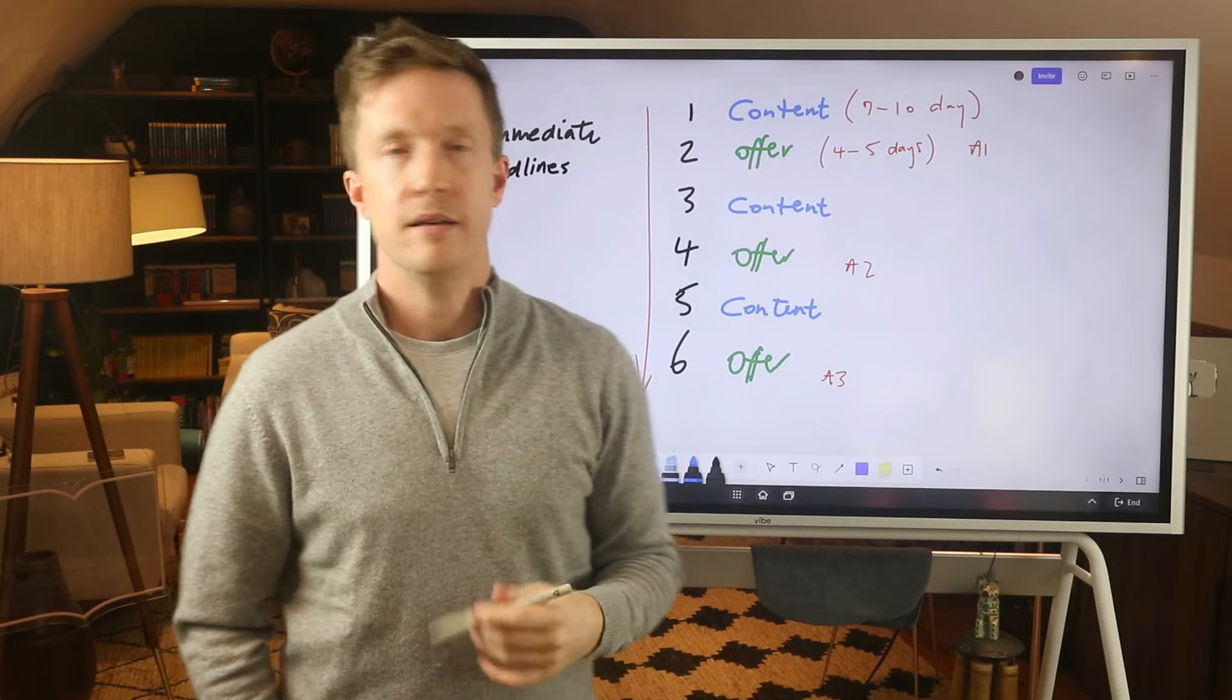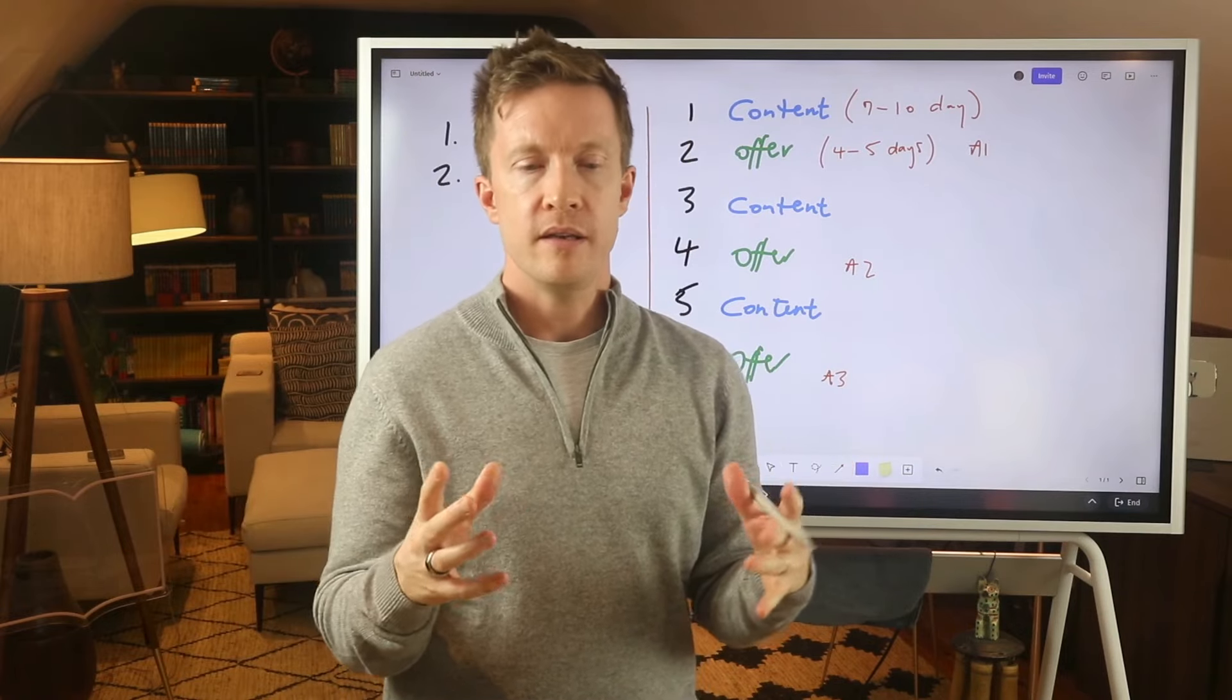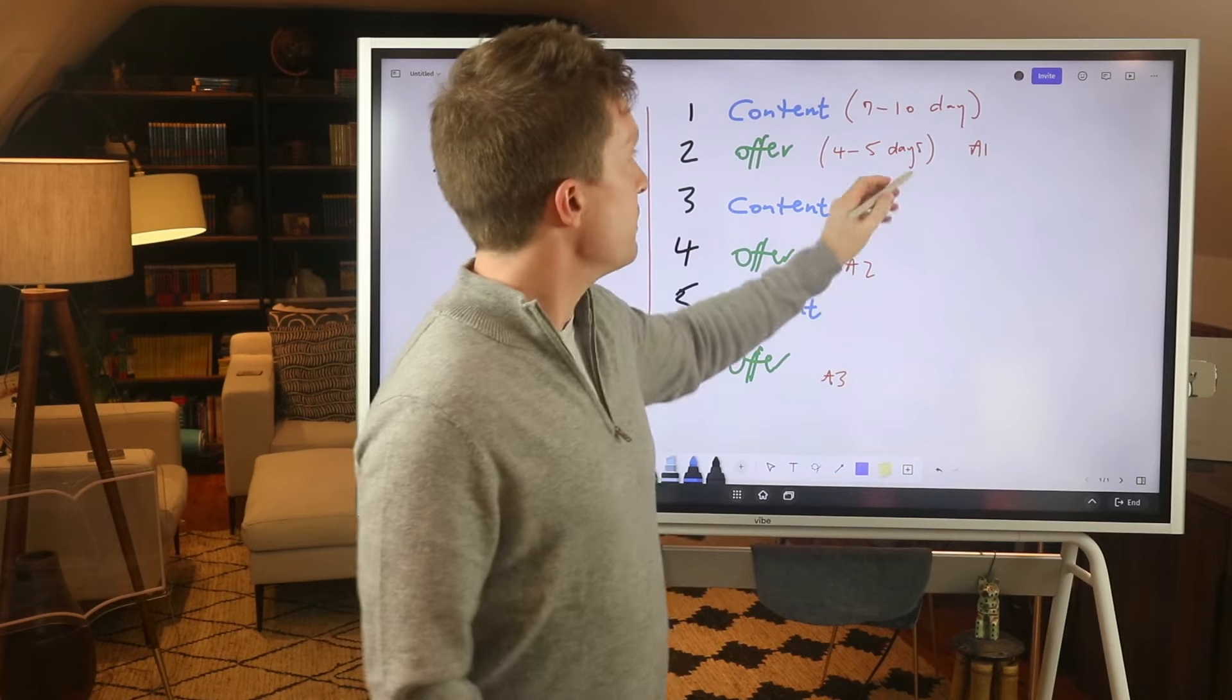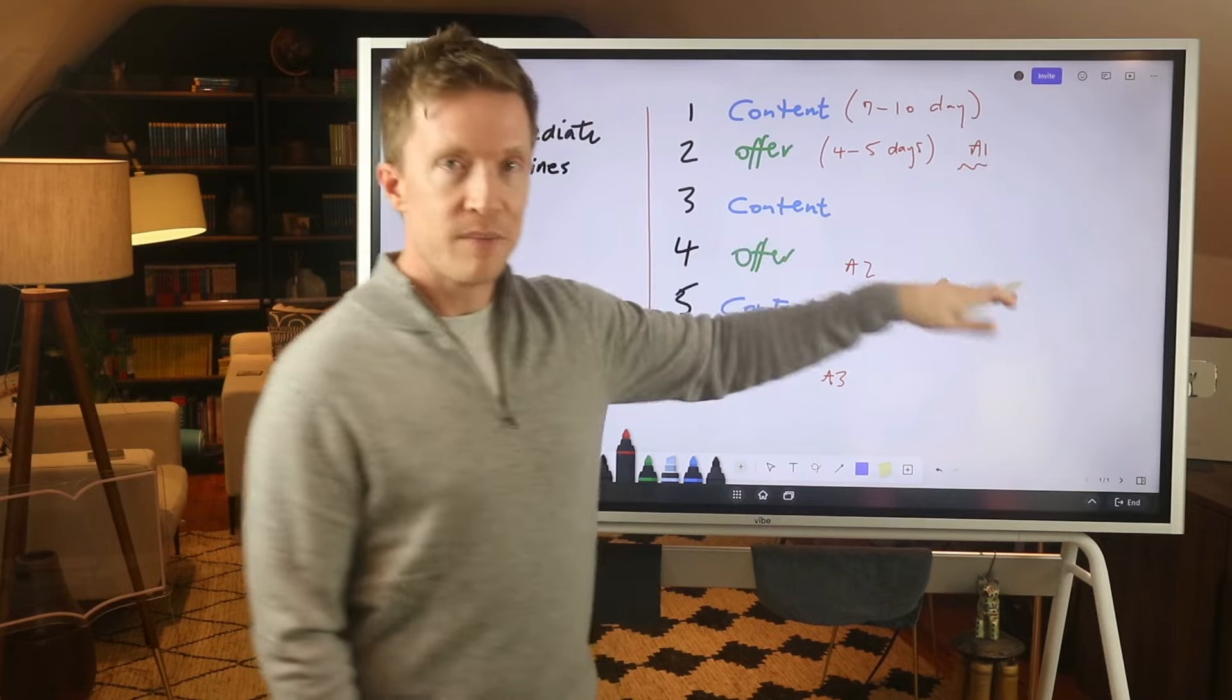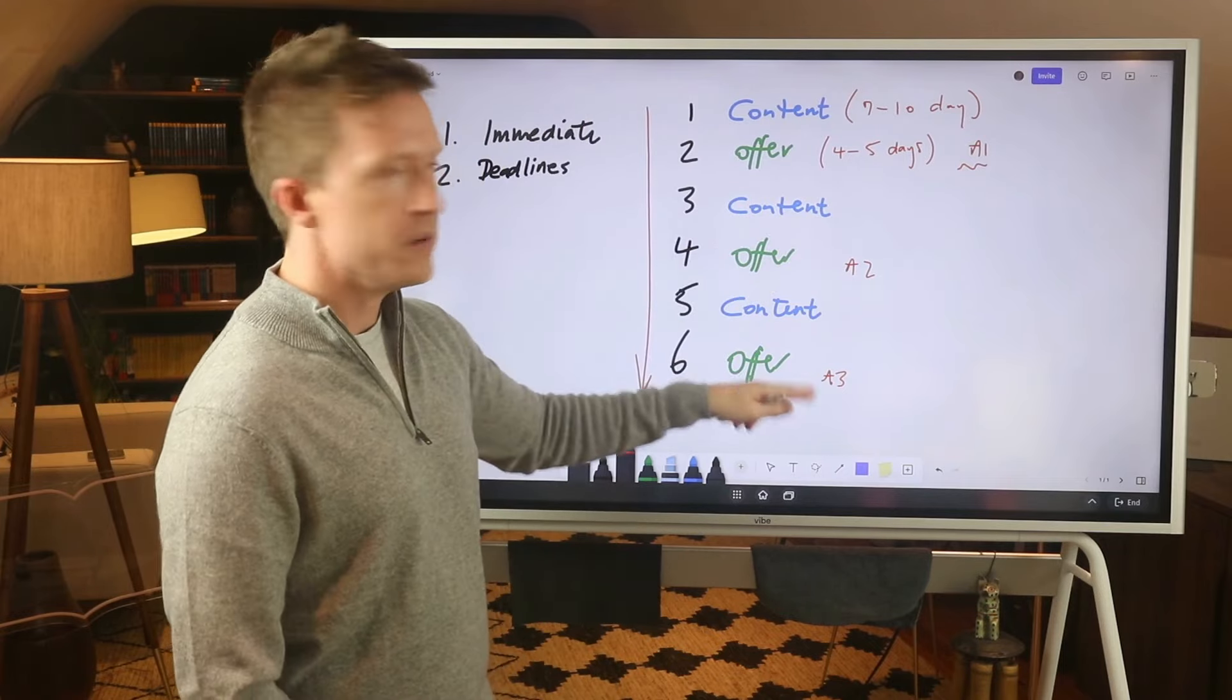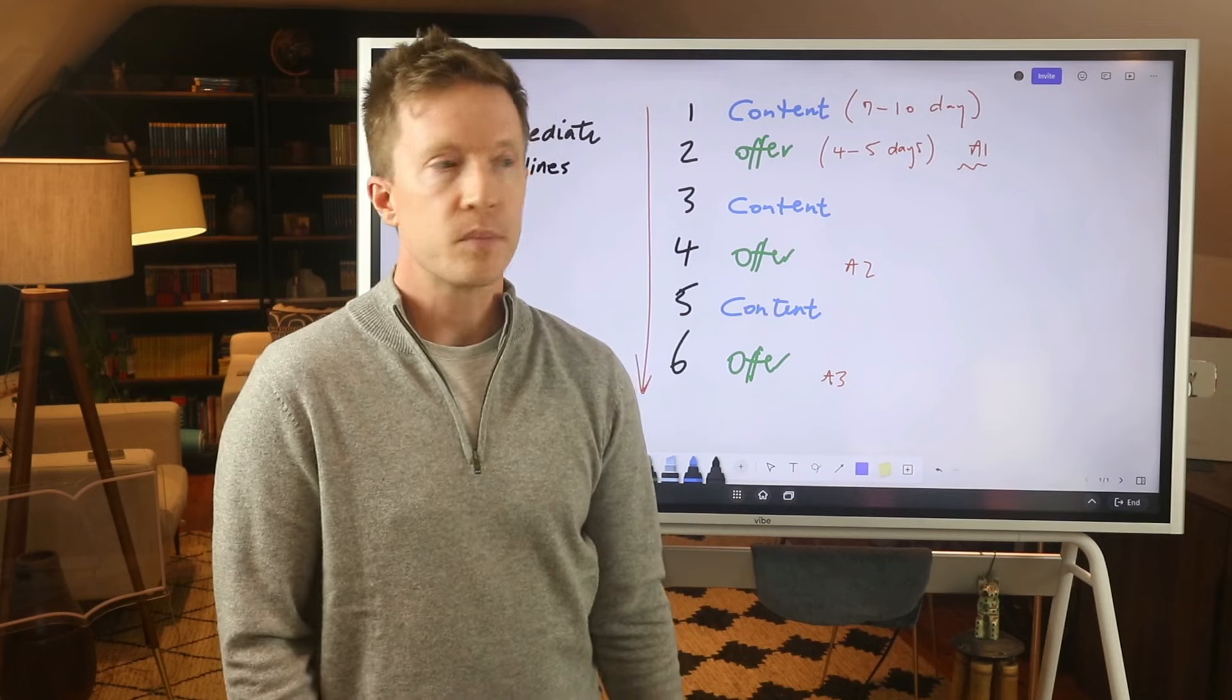And then what we tend to do with the offers is we're offering the same kind of thing, but we're approaching it from different angles. So this might be angle one, this might be angle two, this might be angle three. The first angle might be offer plus bonuses. The second thing might be offer plus payment plan.